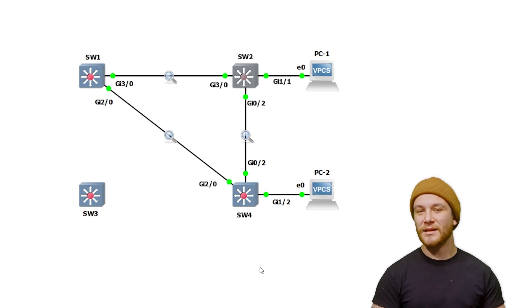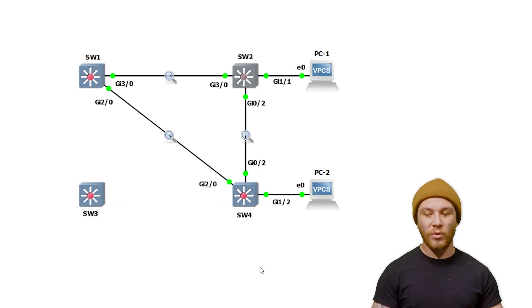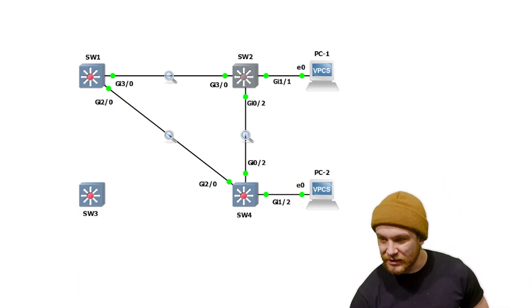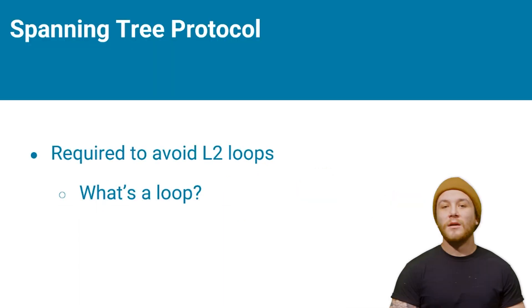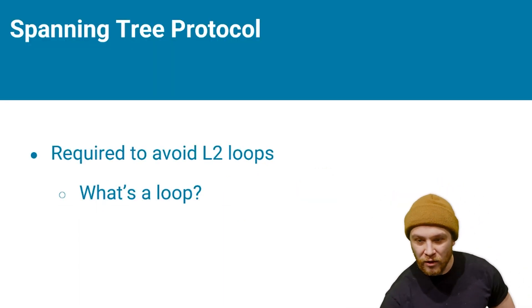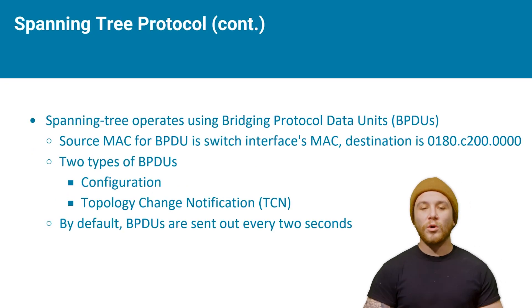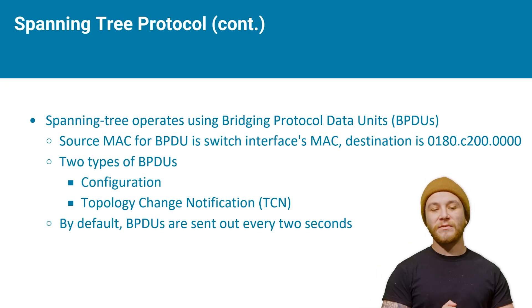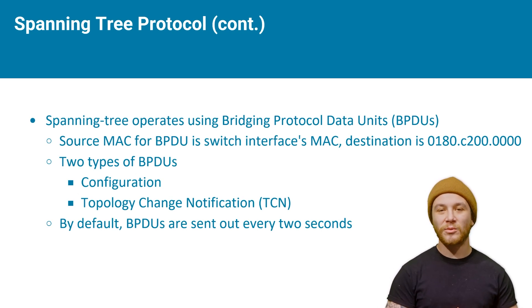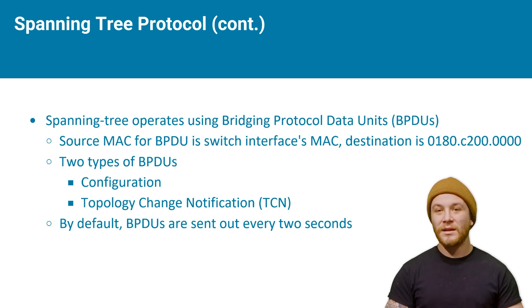That's where spanning tree is utilized as a tool to prevent these kinds of things. It's absolutely required — there's no disabling it really. The way spanning tree works is there is a specific data unit that is sent out of every switch every two to three seconds called a BPDU — a Bridge Protocol Data Unit — and it contains information regarding spanning tree.